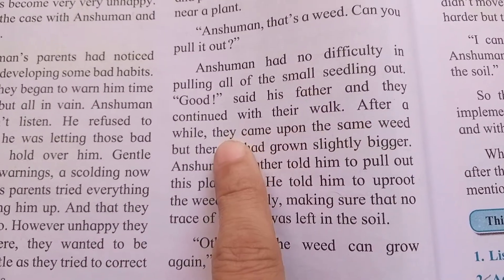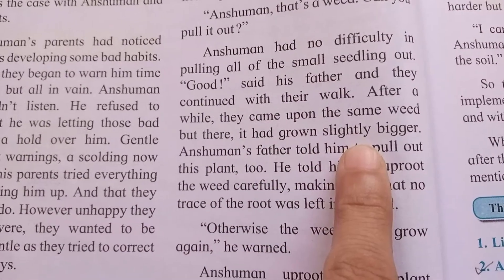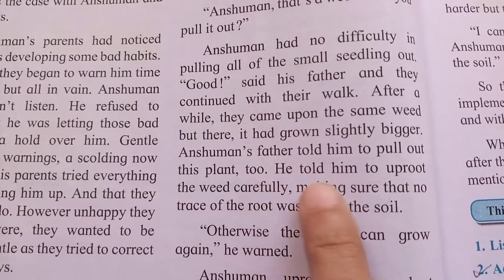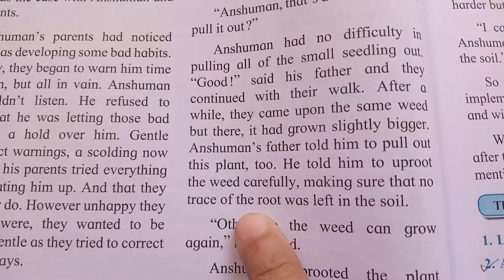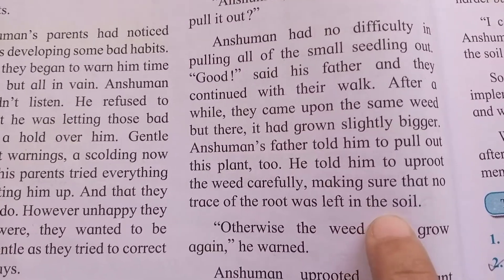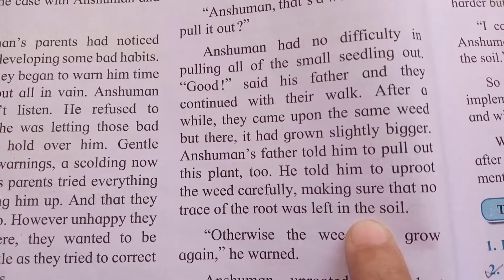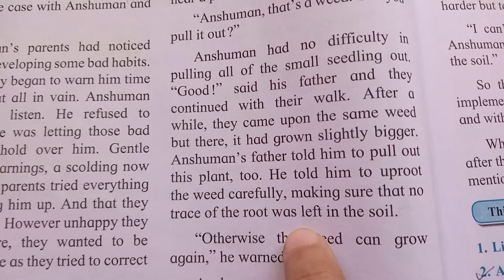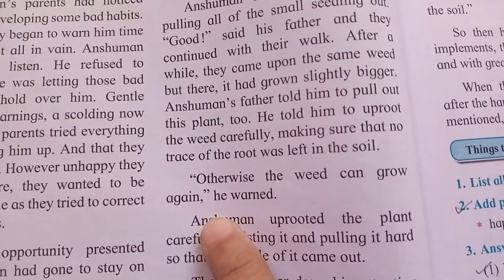After a while they came upon the same weed, but there it had grown slightly bigger. Anshuman's father told him to pull out this plant. He told him to uproot the weed carefully, making sure that no trace of the roots was left in the soil, otherwise the weed can grow again.